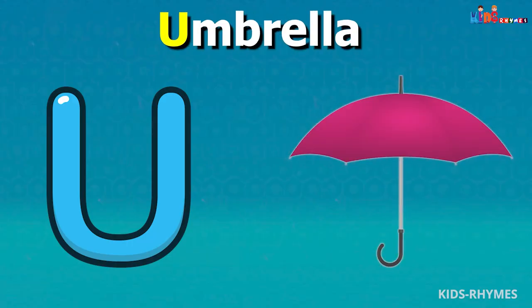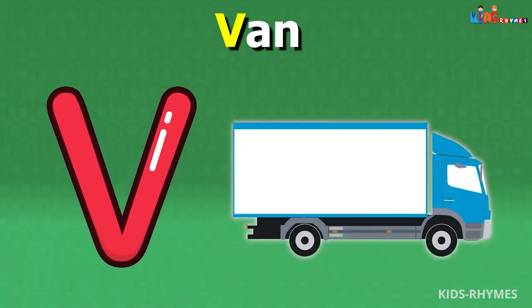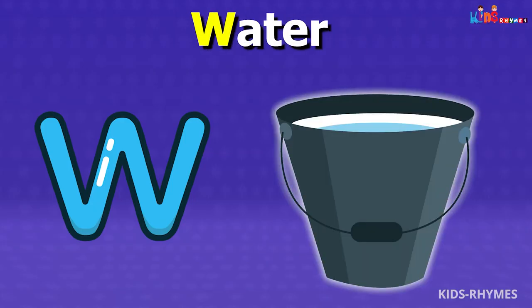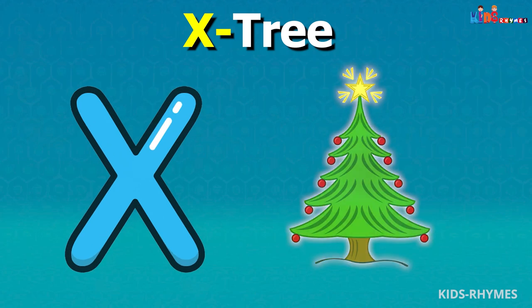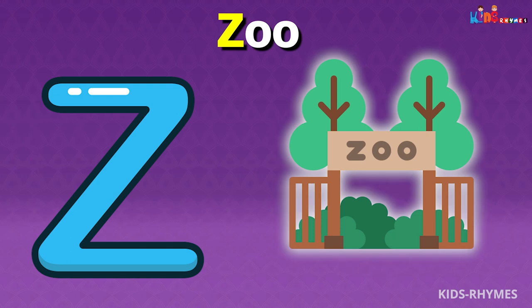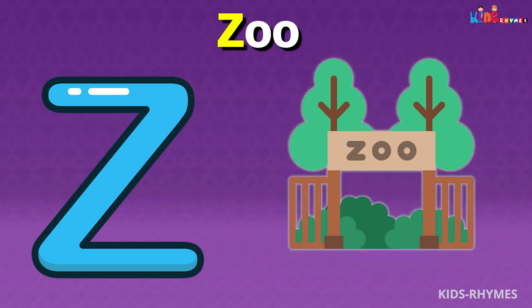T for tub, U for umbrella, V for van, W for water, X for x-ray, Y for yak, Z for zoo.